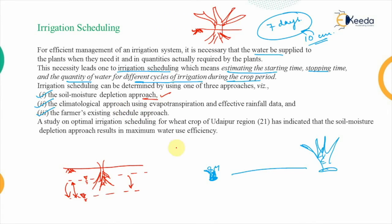The climatological approach means that if harsher weather or climate conditions increase chances of evapotranspiration — the loss of water to the atmosphere — or if effective rainfall decreases, then irrigated water supply is required, and that is how irrigation is scheduled. The farmer's existing schedule approach uses traditional knowledge or intuition-based experience to determine when rainfall will occur and what amount of water will be required.